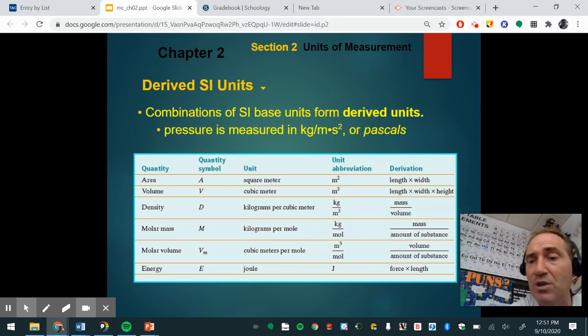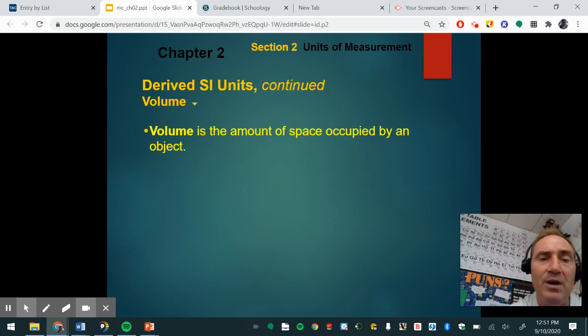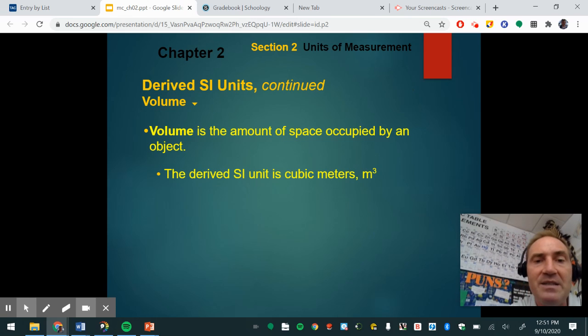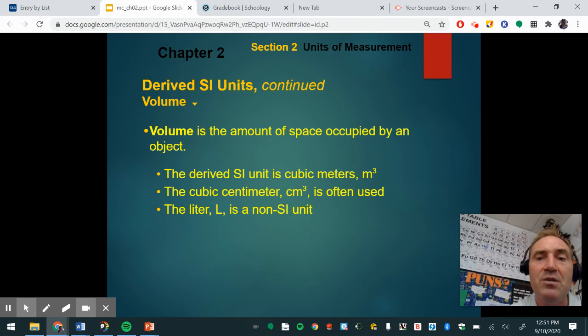So all of these, all the rest of the units are pretty much derived units where we are able to figure them out based off of the combination of other units. So volume is a big one. So volume is length times width times height, and it's the amount of space something takes up and it's meters cubed. Now, meters cubed is huge. It's like the giant size of your desk. So it's a little big. So we typically use cubic centimeters or milliliters. And then the liter is basically equal to a thousand cubic centimeters or a thousand liters.